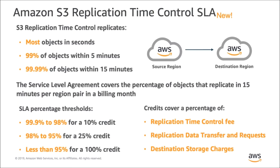Replication Time Control gives you predictable replication times such that most objects replicate in seconds. 99% of objects replicate within 5 minutes and 99.99% of objects replicate within 15 minutes. This replication performance is backed by an SLA that covers the replication of 99.9% of objects in each replicating region pair in any billing month. In the unlikely case that the SLA is not met, you'll receive a credit on the replication time control charges, data transfer and request charges, and the destination storage charges associated with the objects that did not replicate within 15 minutes. You can view the full service level agreement on the AWS SLA website.